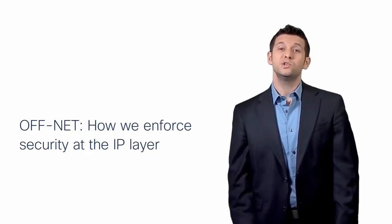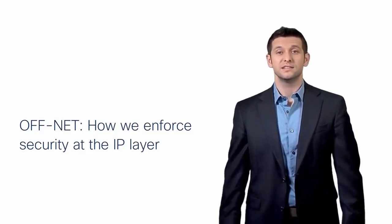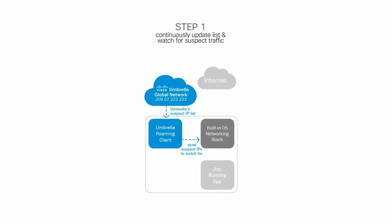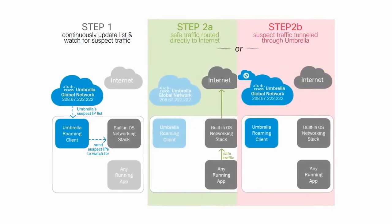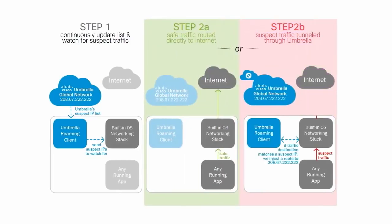One method that attackers use is to hard-code IP addresses into the malware file instead of using DNS for command and control callbacks. Luckily, we do have a way to enforce at the IP layer as well. Leveraging the same roaming client, we continuously push down a list of about 50,000 suspect IPs that our researchers have observed payloads connect to without DNS lookups. When a rule is triggered, it tells our client to immediately add just this IP to the built-in IPsec VPN, which tunnels this one connection to our global network — we either block it right away or proxy the connection and block only bad URLs.